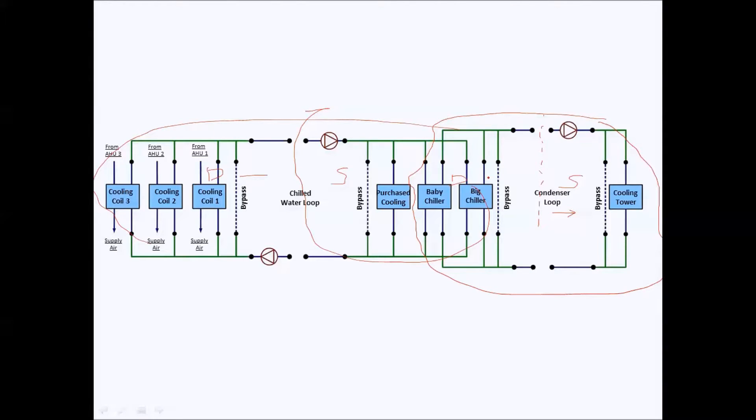So from here to here this would become one branch. This branch would have this as a starting point, this as an end point. Starting is decided according to the movement of fluid, so water would be flowing like this, so this would become the starting point of district cooling and this would become the endpoint.